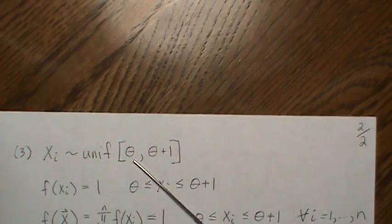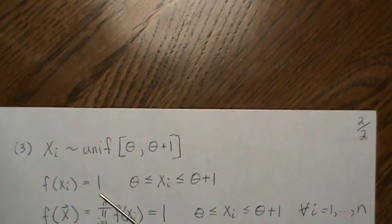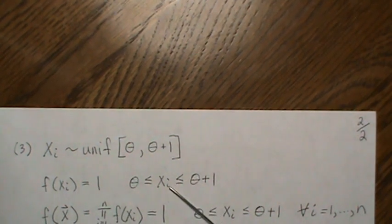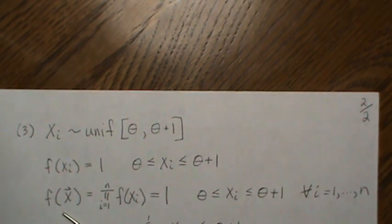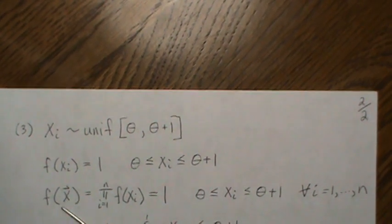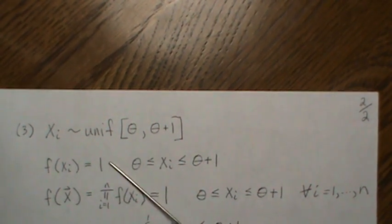And now one more example. Let's let Xi be a uniform from theta to theta plus one. And so our density is one, and that's for every Xi.